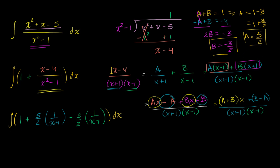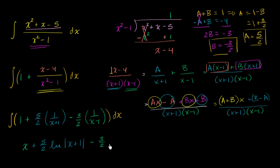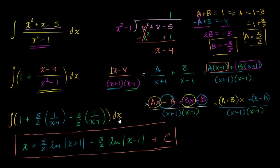Now it's straightforward to integrate. The antiderivative of one is just x. The antiderivative of five halves times one over x plus one is plus five halves times the natural log of the absolute value of x plus one — we can do this because the derivative of x plus one is one. Similarly, the antiderivative of negative three halves over x minus one is minus three halves times the natural log of the absolute value of x minus one. And of course, we cannot forget our constant C. And there we have it — we've been able to evaluate this integral.